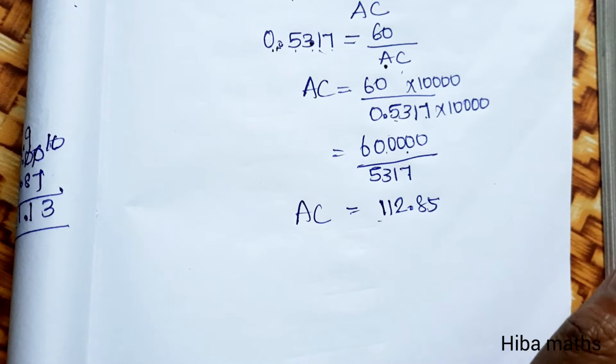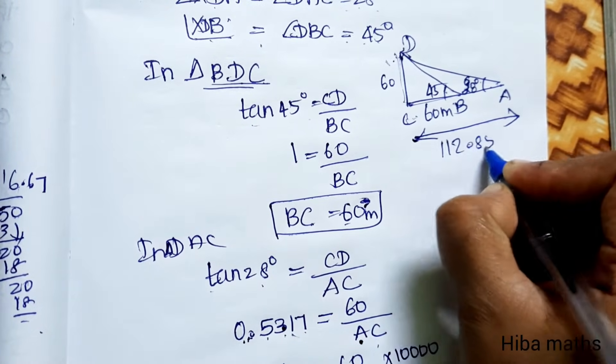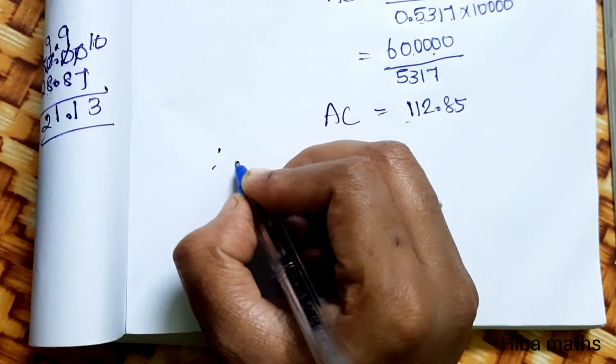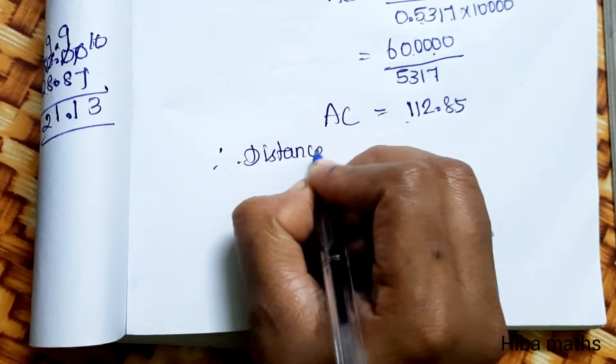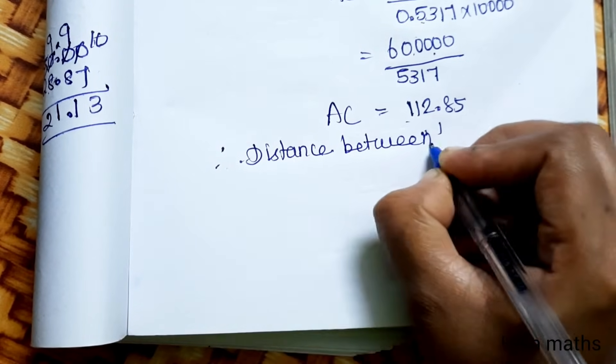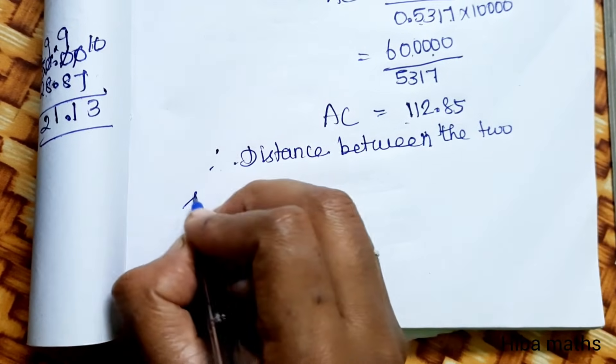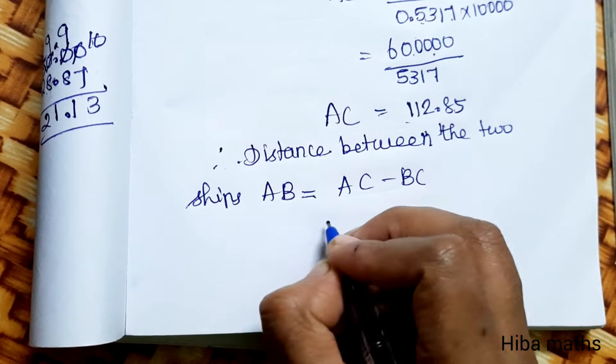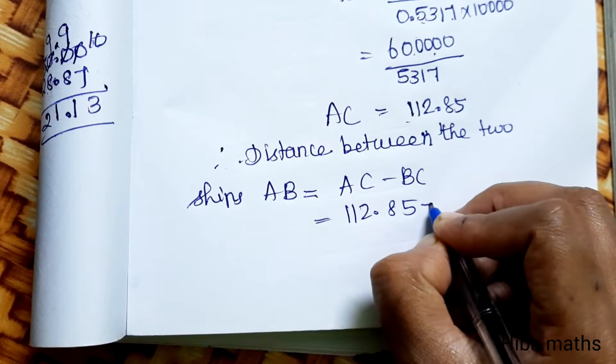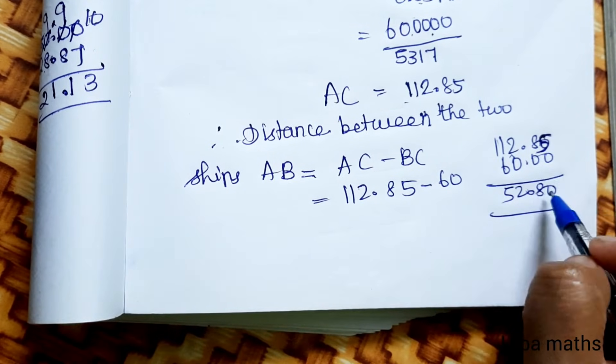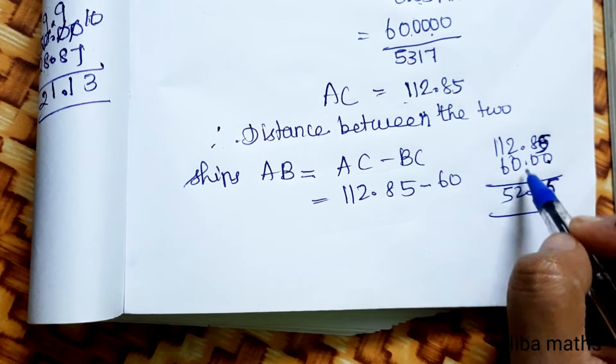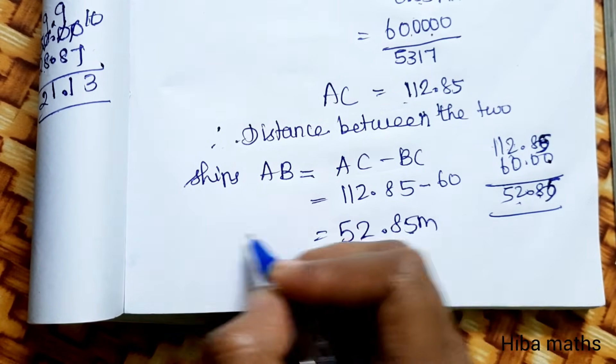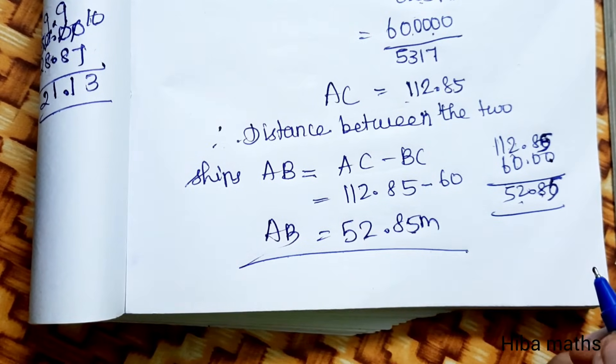If we see the diagram is full length, AC value. Now we have to do 60. We need to balance this. Therefore distance between the two ships AB, the distance that is equal to AC minus BC. AC value 112.85 minus BC value 60. So the answer is 52.85 meters is AB distance between the two ships.